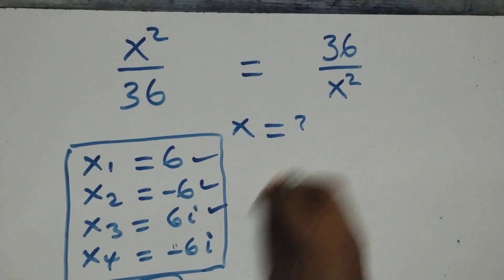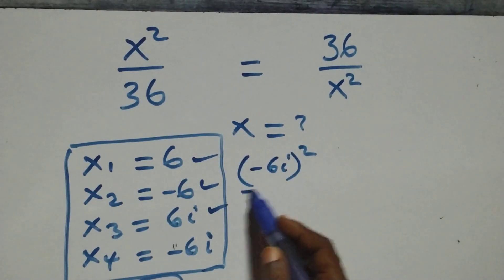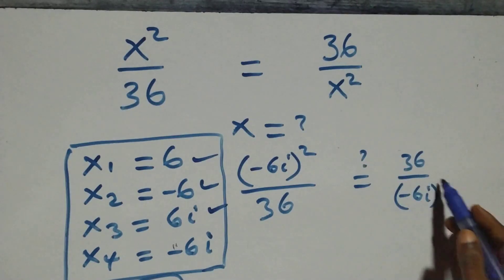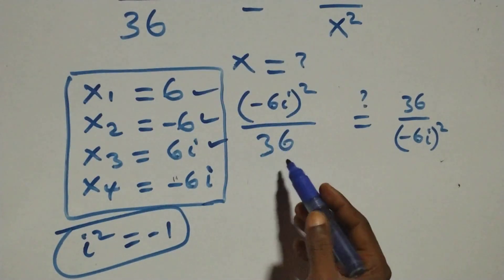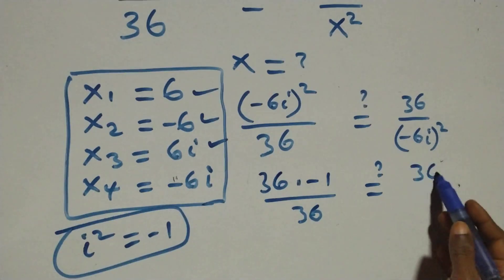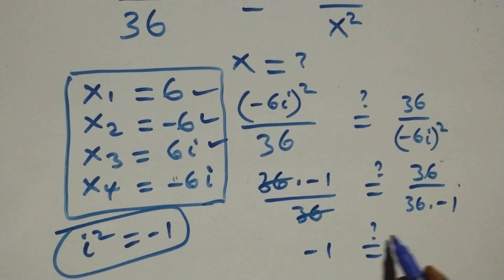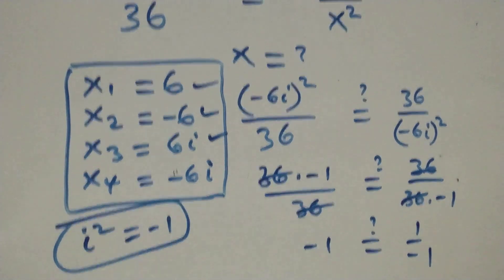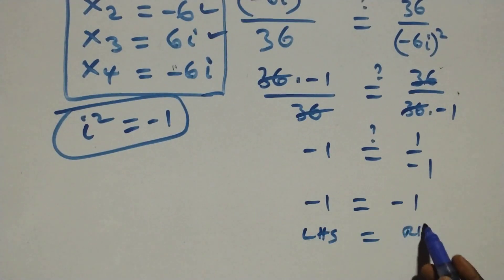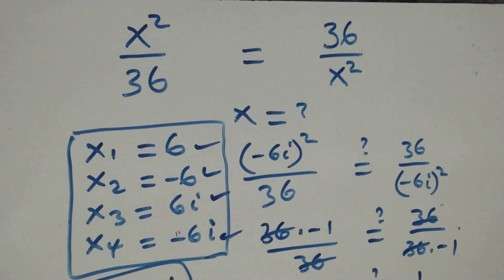Substituting x = −6i: the equation becomes (−6i)² over 36. Is this equal to 36 over (−6i)²? Squaring gives 36 × i² = 36 × (−1) over 36, which equals −1. The right hand side similarly gives 1 over (−1) = −1. Left hand side equals right hand side, so x = −6i also satisfies the given problem. Thank you for watching, don't forget to subscribe for more videos.